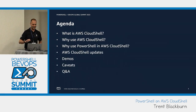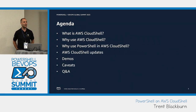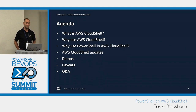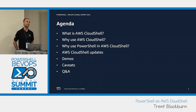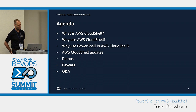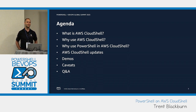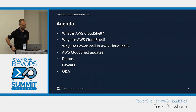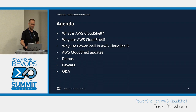The agenda for today's session: we're going to talk about what AWS CloudShell is as a very first starting point. We're going to talk about why you should use it, and then why you should use PowerShell in AWS CloudShell. Some updates around the product over the last few years. We're going to cover lots of demos, a few pitfalls and caveats that are important to know about with CloudShell, because it is not perfect. And finally, we'll have some time at the end for questions and hopefully some answers.